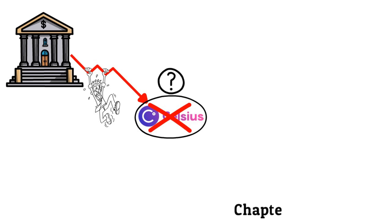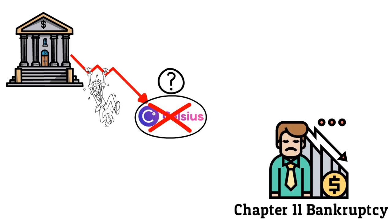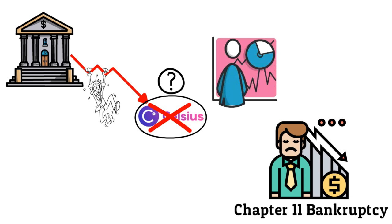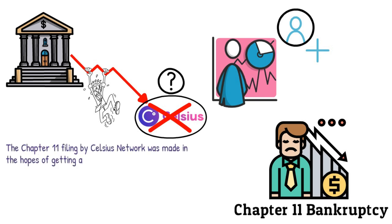Well, the Chapter 11 bankruptcy that Celsius filed for is also known as reorganization bankruptcy, which is kind of like a petition that allows companies to still be in operations while restructuring their debts over time. So, you see, it is not totally a bad thing. Rather, it is a long shot at offering a solution to its millions of users. The Chapter 11 filing by Celsius Network was made in the hopes of getting a chance to stabilize the company.